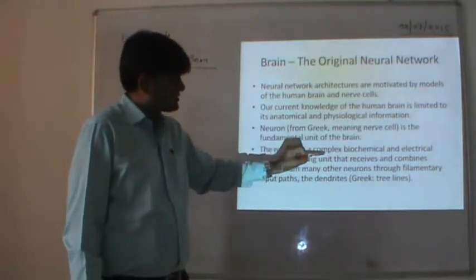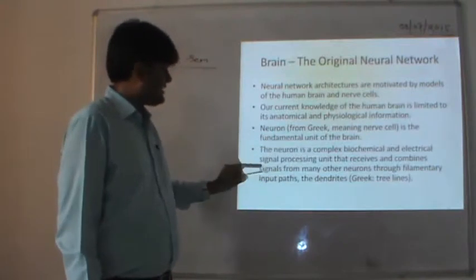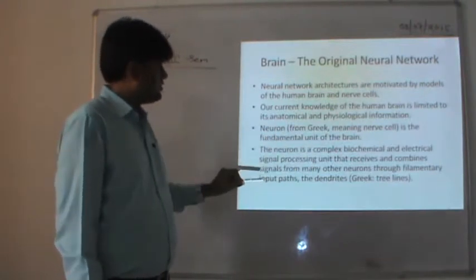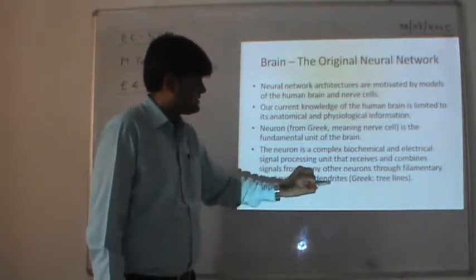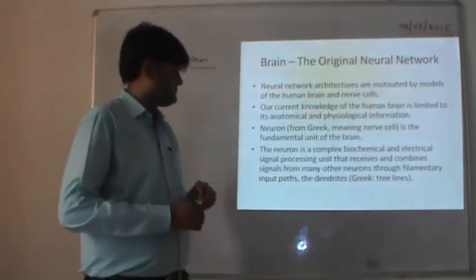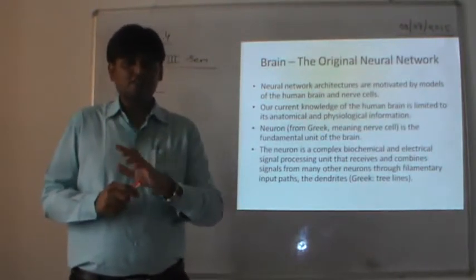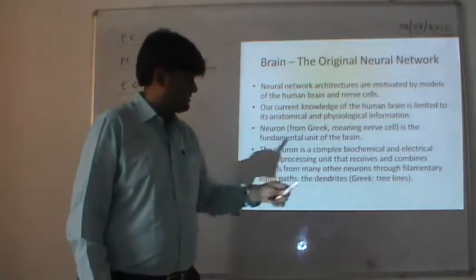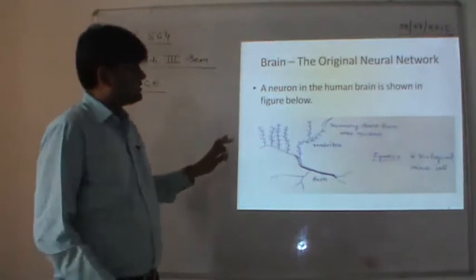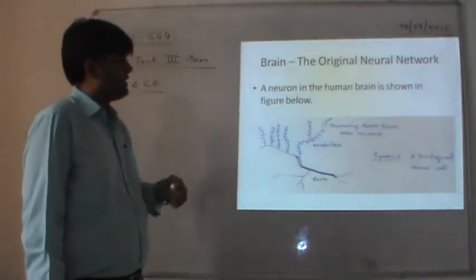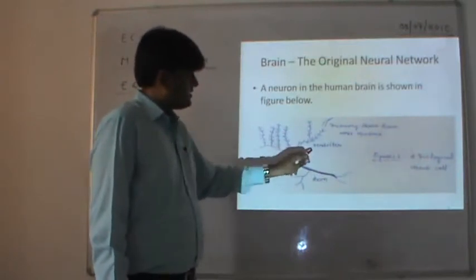The neuron is a complex biochemical and electrical signal processing unit that receives and combines signals from many other neurons through filamentary input parts called dendrites. This is a biological nerve cell or a neuron in the human brain. Dendrites are the tree-line structures of the neuron — the word 'dendrite' comes from the Greek word 'dendron,' whose literal meaning is 'tree lines.'